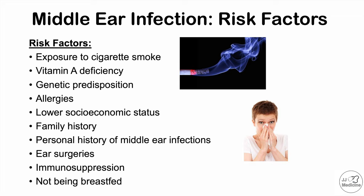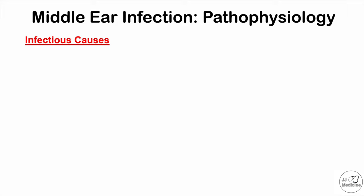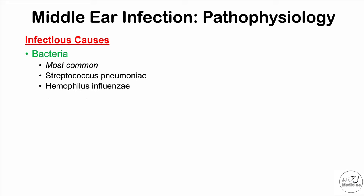Now let's talk about the pathophysiology of a middle ear infection. It is an infection of the middle ear, so the infectious causes include bacteria, which are the most common causative organisms. The bacteria most commonly causing a middle ear infection are Streptococcus pneumoniae, Haemophilus influenzae, and Moraxella catarrhalis — these are organisms often memorized in medicine for causing acute otitis media.